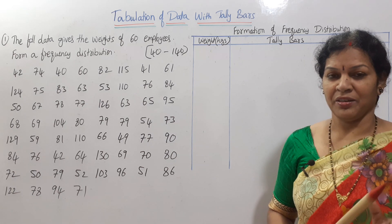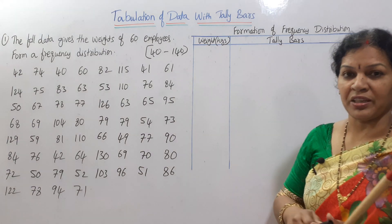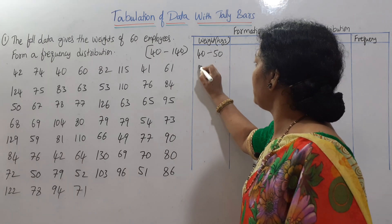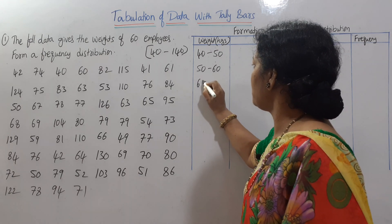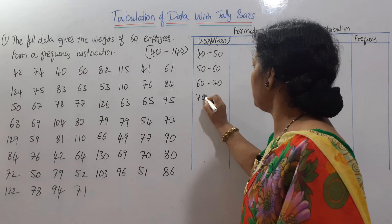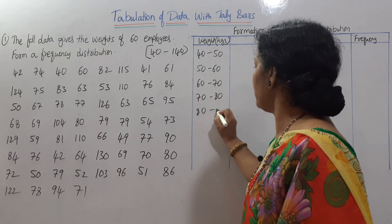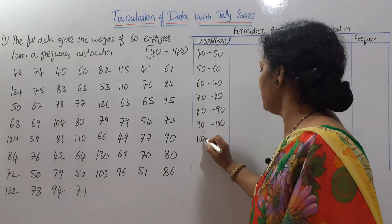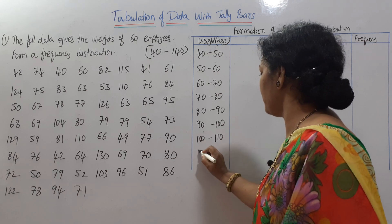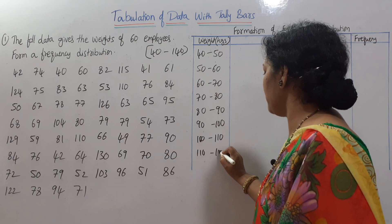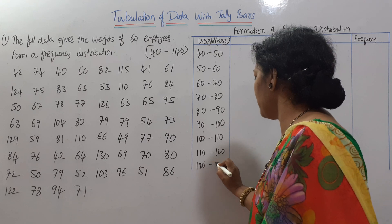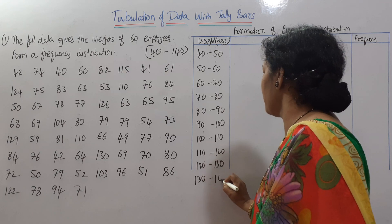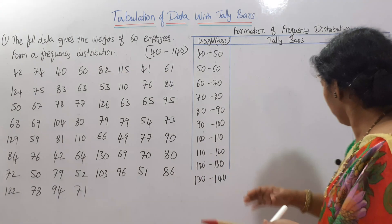I am taking a class interval of 10, so: 40–50, 50–60, 60–70, 70–80, 80–90, 90–100, 100–110, 110–120, 120–130, and 130–140. We extend up to 140 to cover the maximum value of 130.